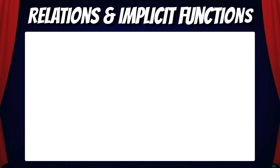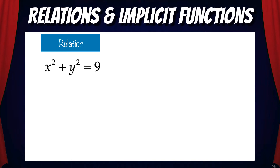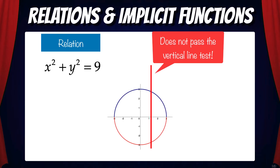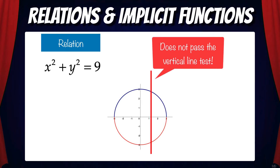So now let's talk about relations and implicit functions. As an example, let's look at the relation x squared plus y squared equals 9. Now, this is a circle with a radius of 3. As we can see, this is not a function — it does not pass the vertical line test.